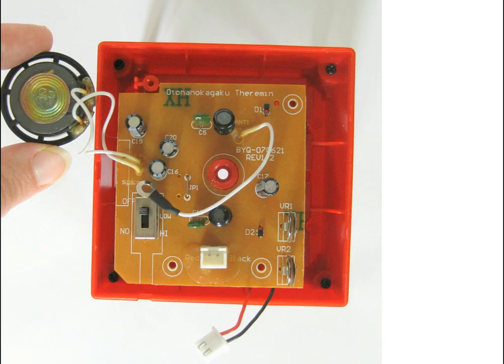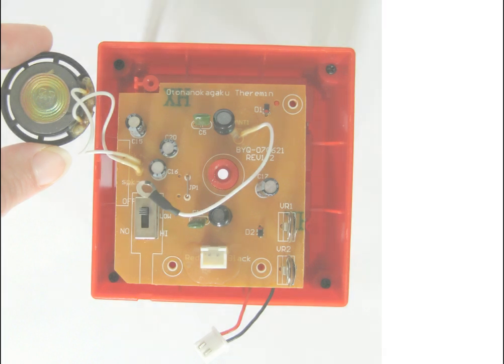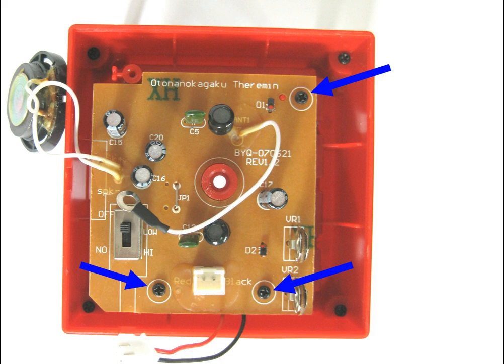Again, be sure not to pull on the wires going to the speaker too much and do not touch the transparent cone part of the speaker because it's fragile. Fasten the circuit board in place using the last three small screws, which have blue arrows pointing to them in this picture.